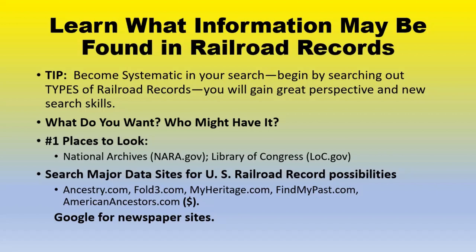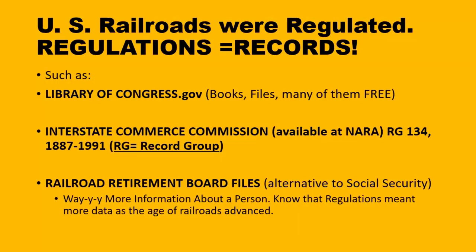Also especially Google for those newspaper sites, because there are so many of them today, in addition to something like newspapers.com. U.S. railroads were regulated, and regulations mean there are going to be records. Unfortunately, lots of those records are not online, so plan to contact various kinds of archives. With your handouts today, you've got the one regarding the records for the Great Northern at Minneapolis in the Minnesota Historical Society. Take a look at the finding aids for that one, because that's going to give you an idea of what to ask for within other archives.